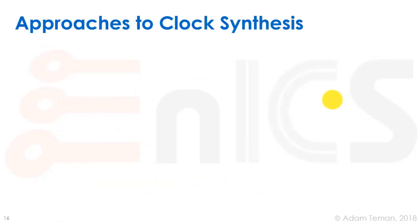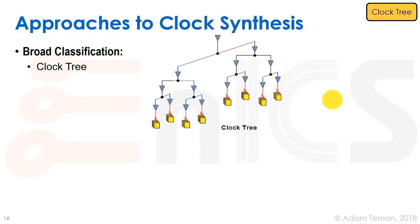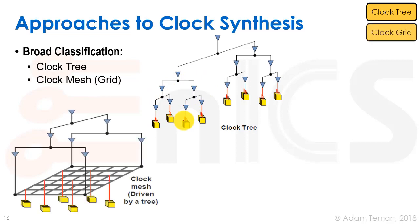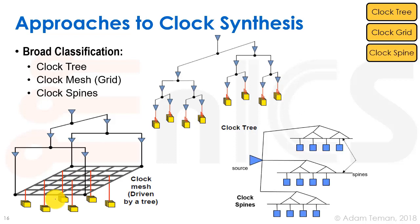To solve this problem we'll take different approaches to clock tree synthesis, broadly classified into three categories. The first is a clock tree — a tree with a root as the clock source, divided into buffers that drive lower-level buffers that finally reach the clock sinks. A second approach is a clock mesh or clock grid, a mesh covering the whole chip where sinks are hung off it. An intermediate solution is clock spines, where the source drives spines of the clock tree and flip-flops hang off those.